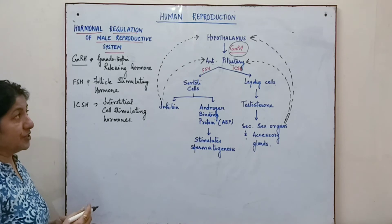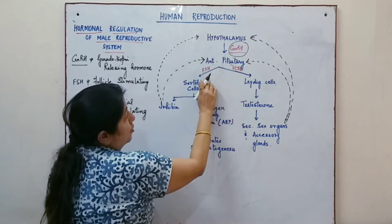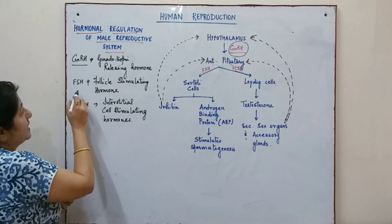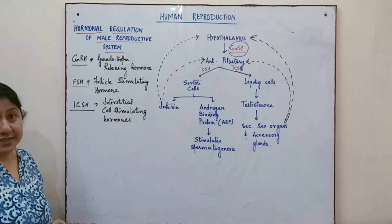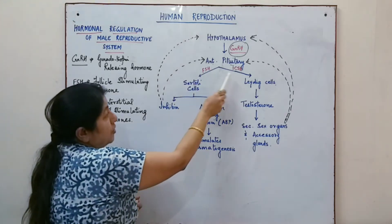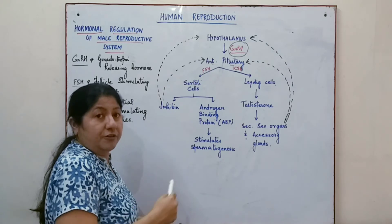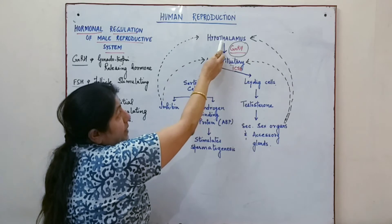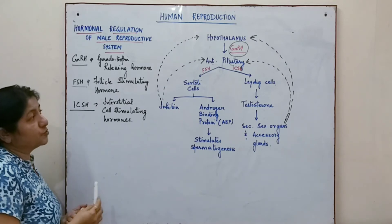This hormone in turn stimulates the anterior pituitary to produce two hormones: FSH and ICSH, known respectively as follicle stimulating hormone and interstitial cell stimulating hormone. These two hormones are produced by the anterior pituitary on getting stimulated by the release of GnRH by the hypothalamus.